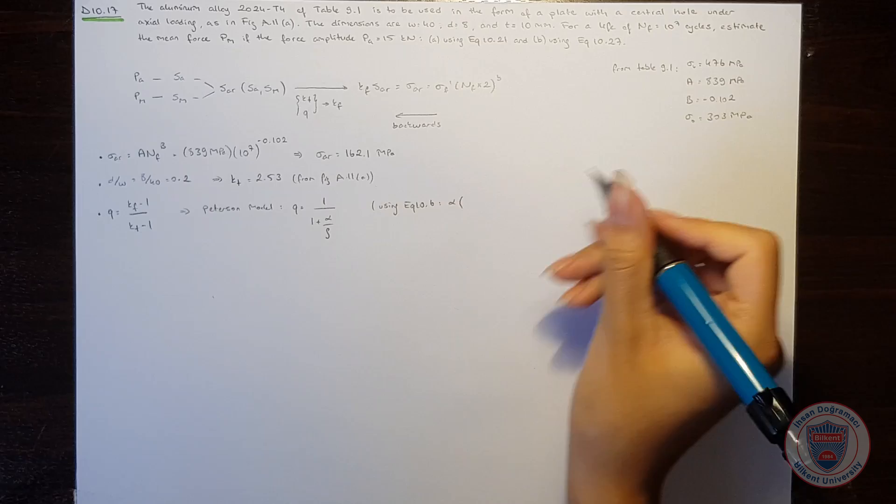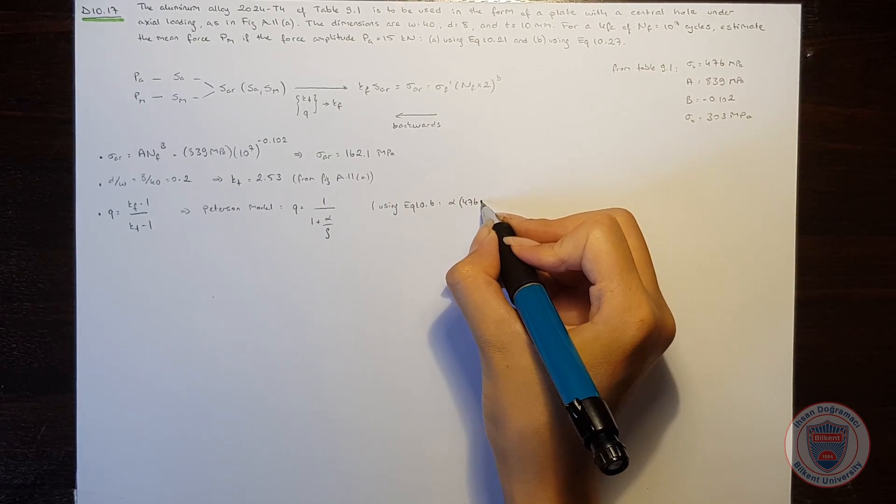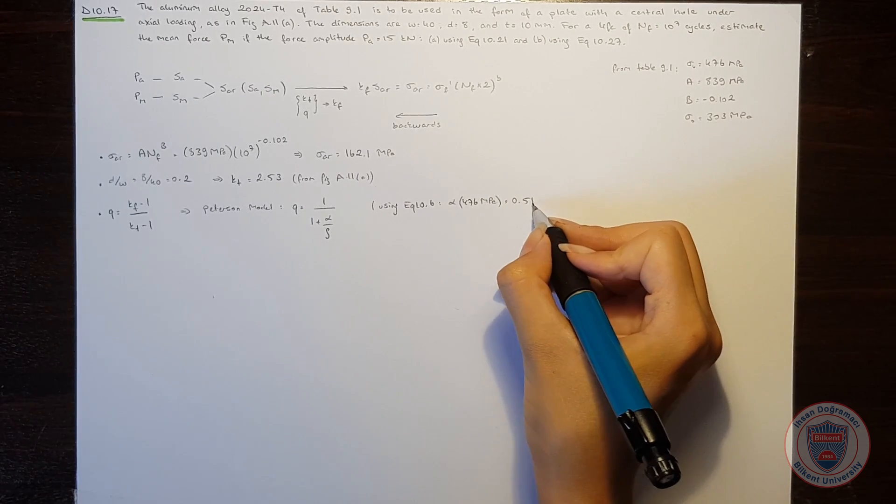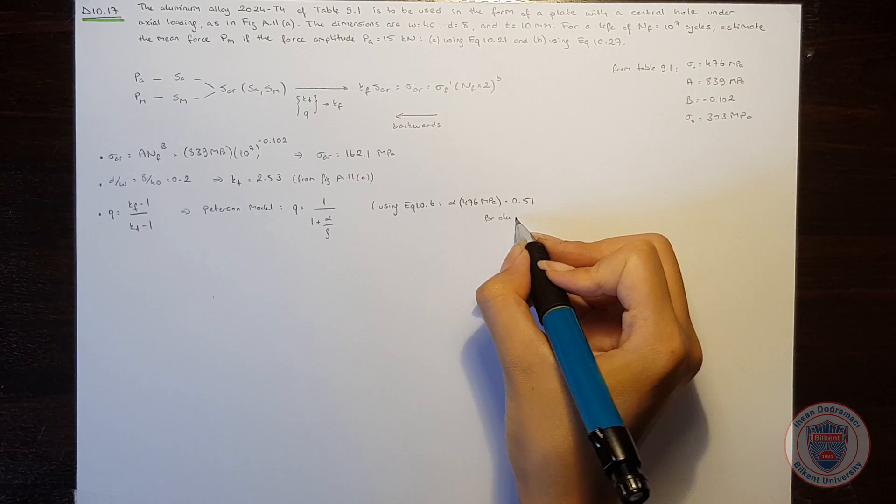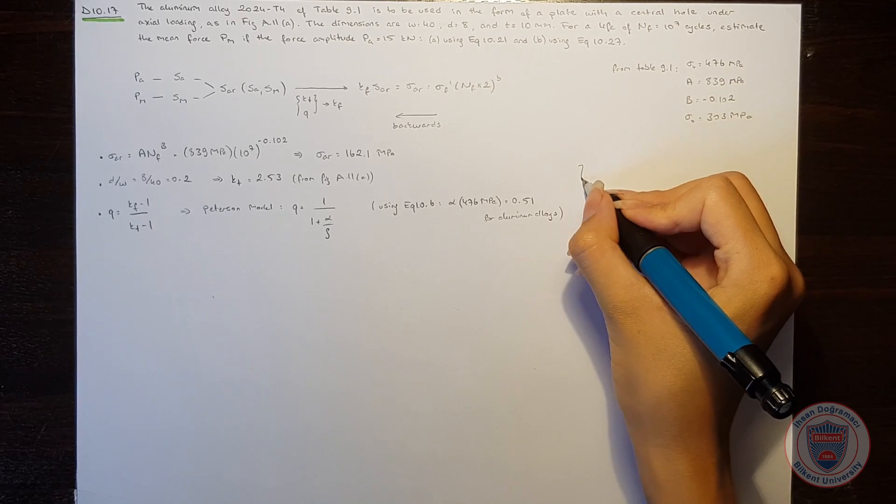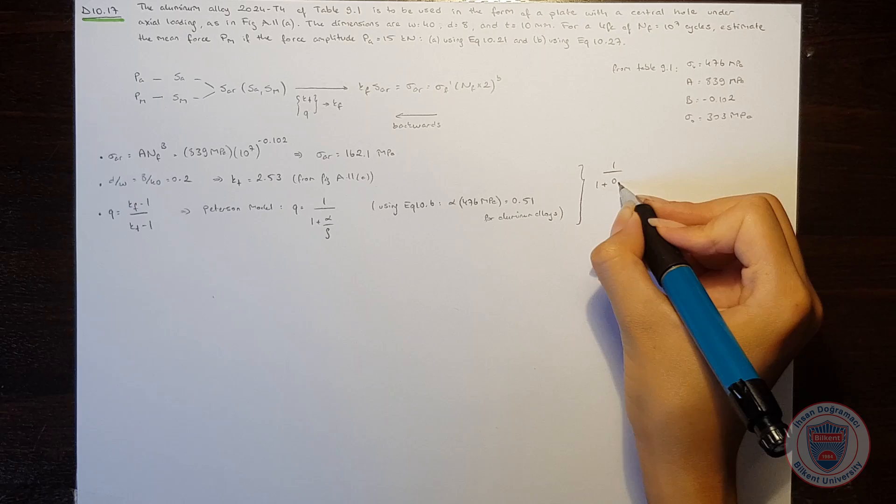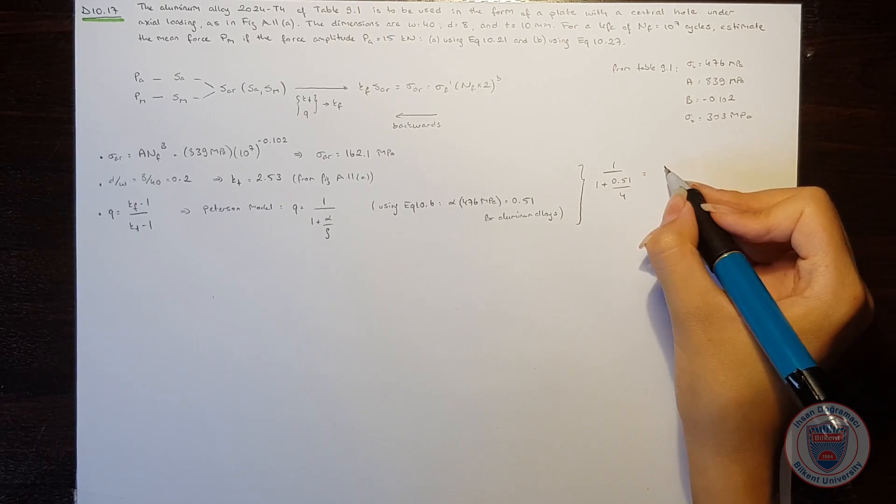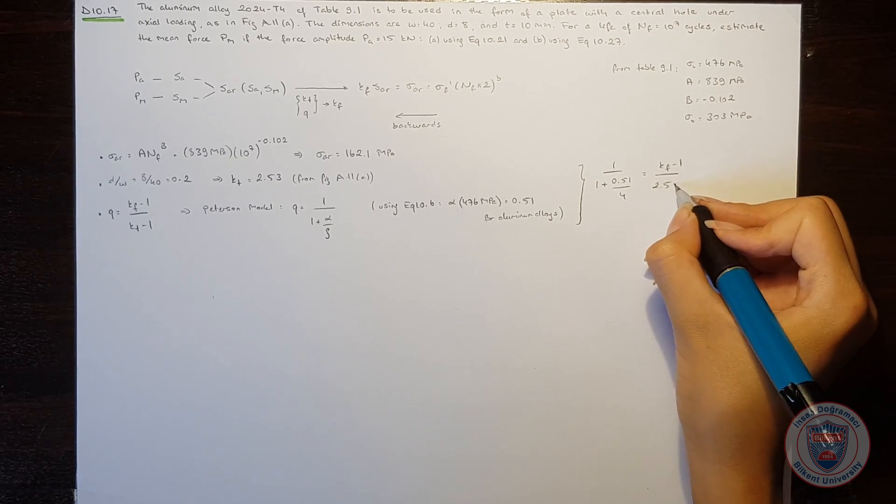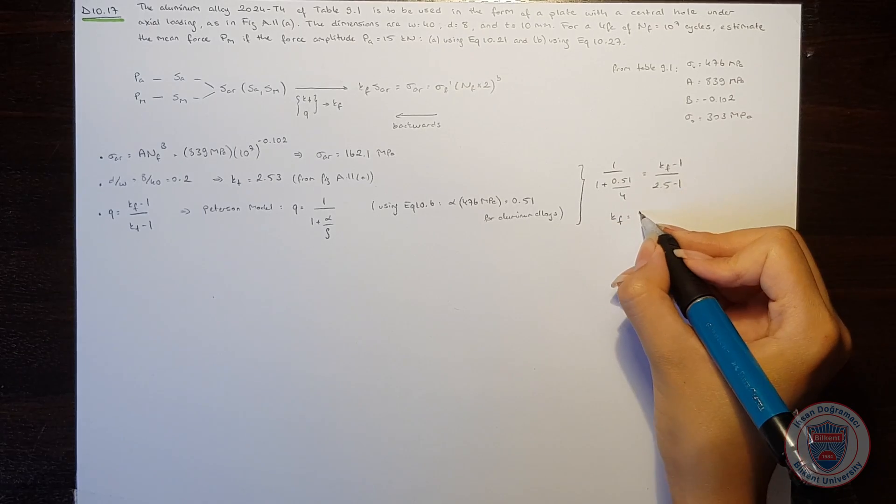The alpha for an ultimate tensile strength of 476 MPa will be equal to 0.51 for aluminum alloys. So, we will see that 1 over 1 plus 0.51 over 2 will be equal to the fatigue notch factor minus 1 over 2.53 minus 1. So that the fatigue notch factor becomes 2.36.